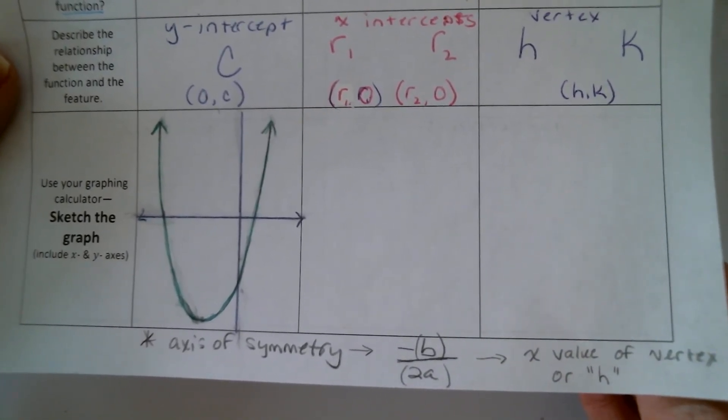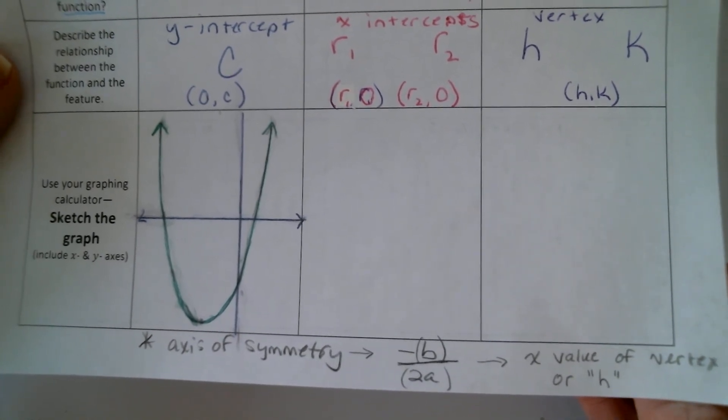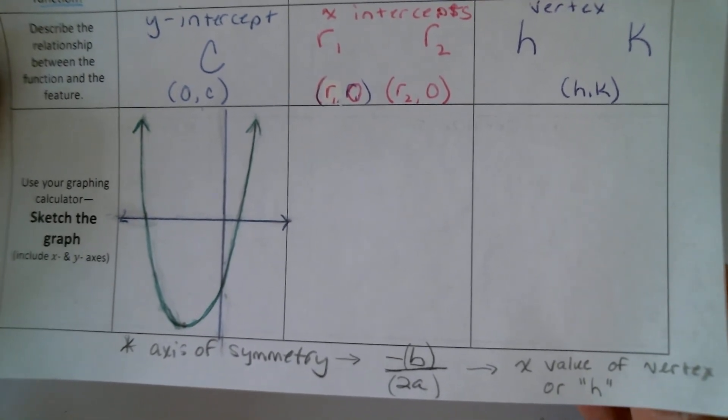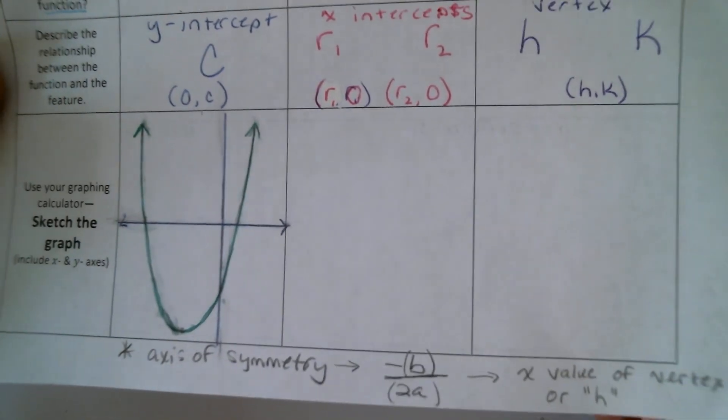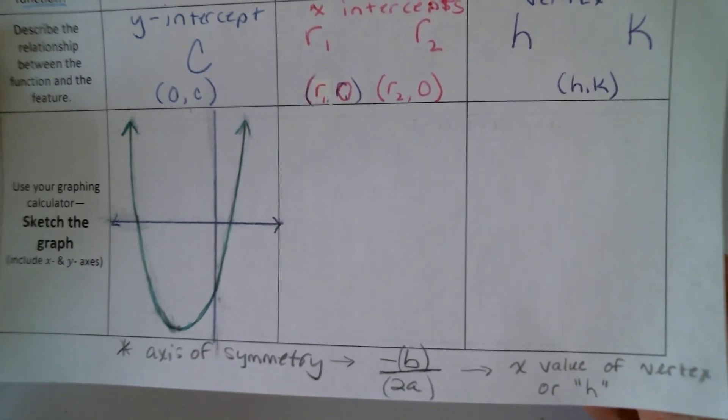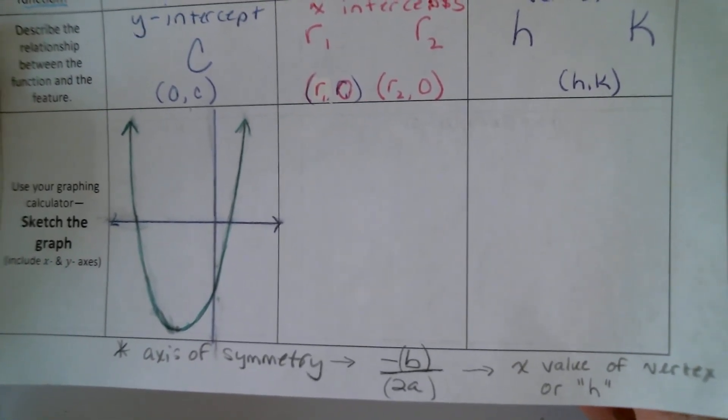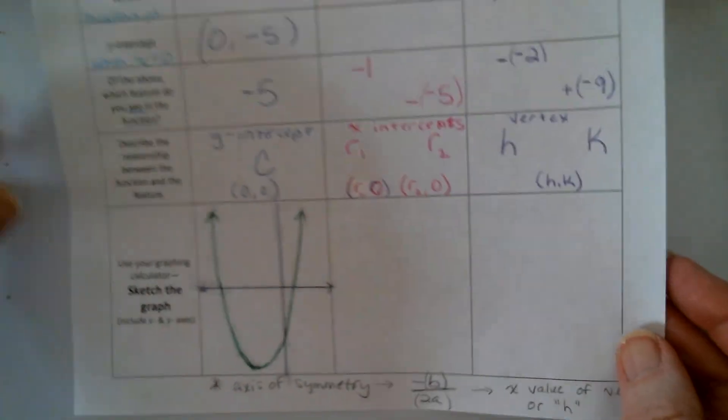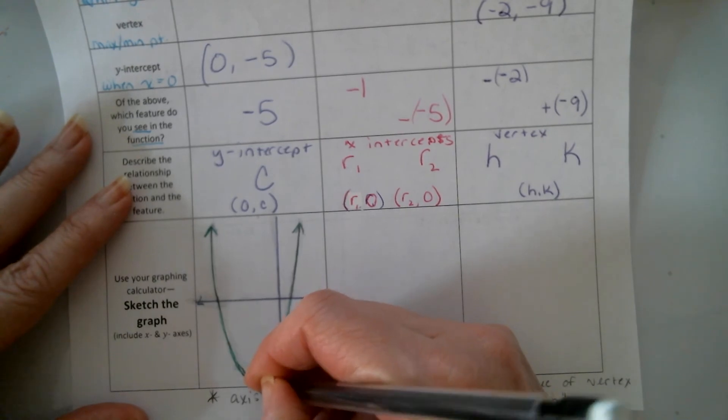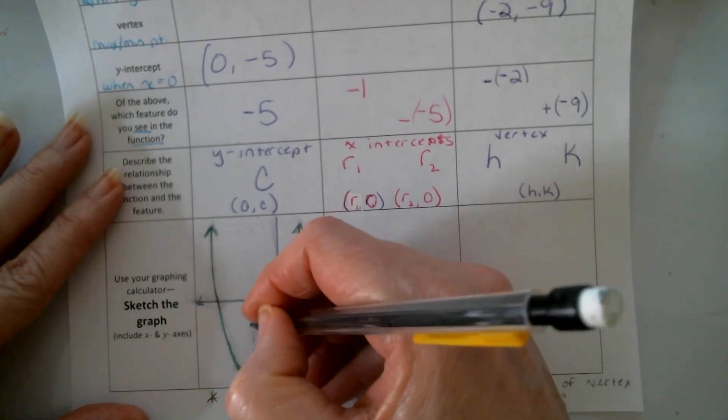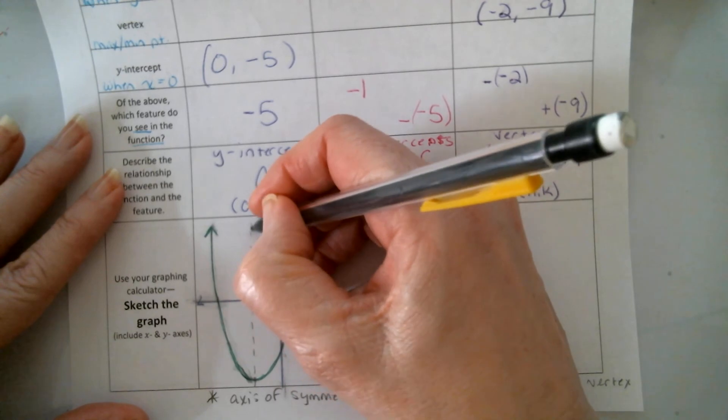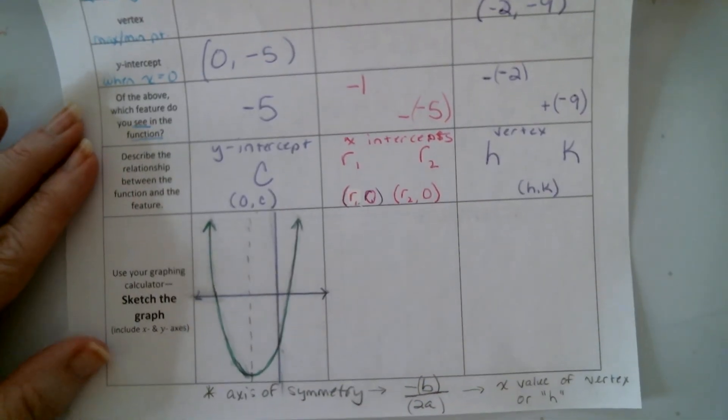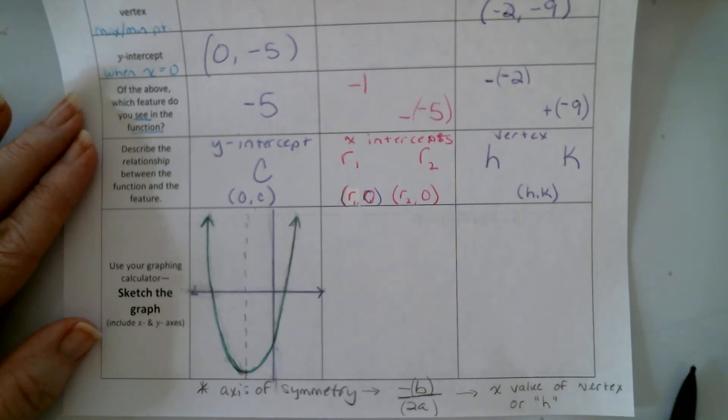Something I do want you to add to the bottom of your notes is a reminder about that axis of symmetry. So the axis of symmetry, we can find it in the vertex. It's that H value of the vertex. But if we don't want to go to the trouble of converting a standard to vertex form, I could still find it by taking the opposite of the B value and dividing it by 2A. So remember the axis of symmetry is the X value of the vertex, that H. And it divides our parabola into these two congruent halves, right? Okay, so just something that we're going to need to remember in the future.